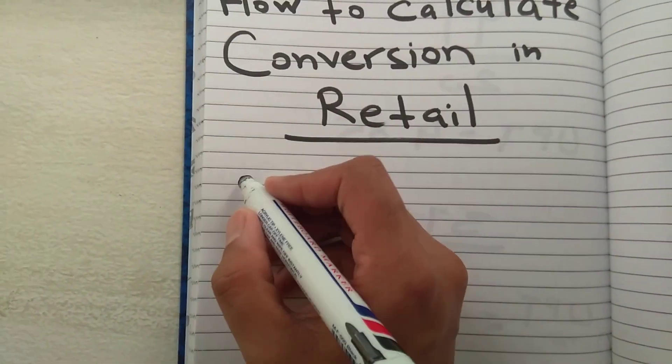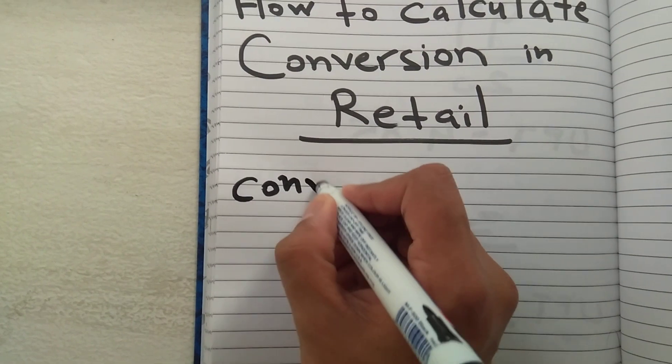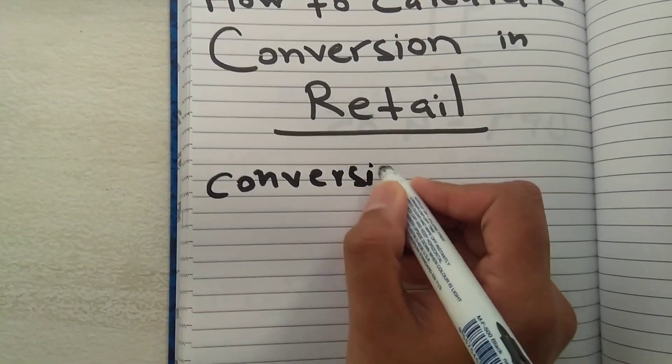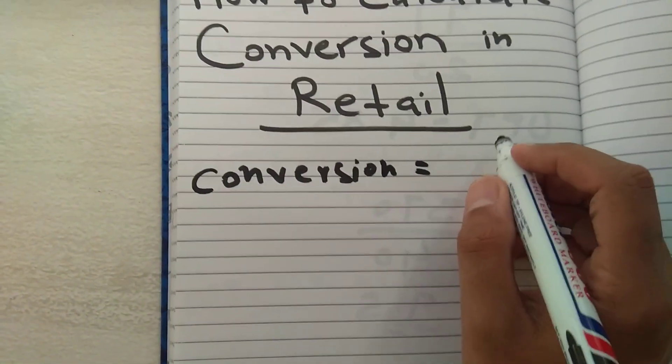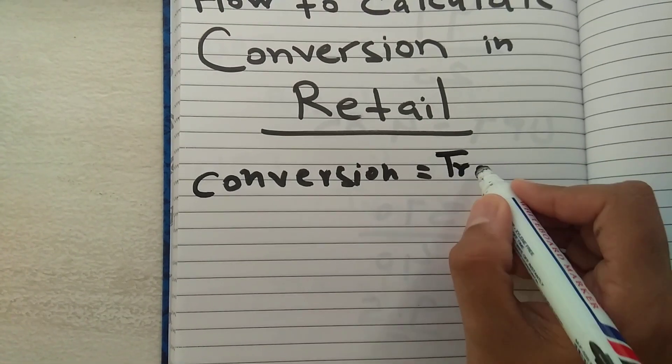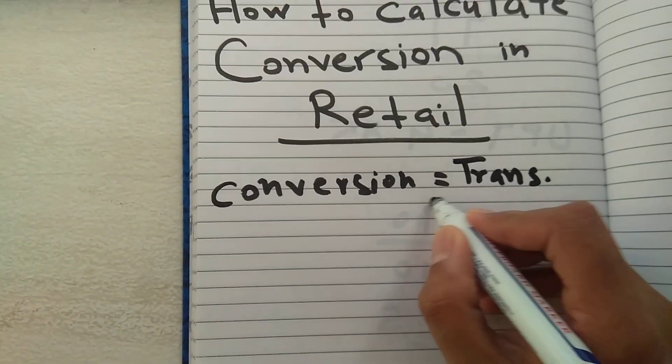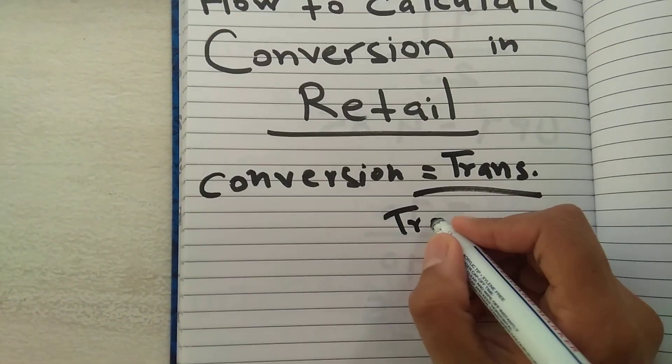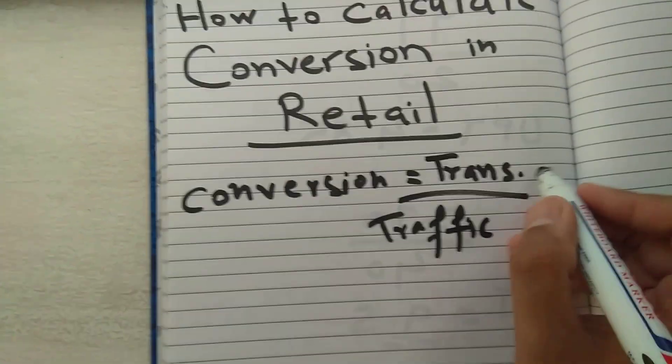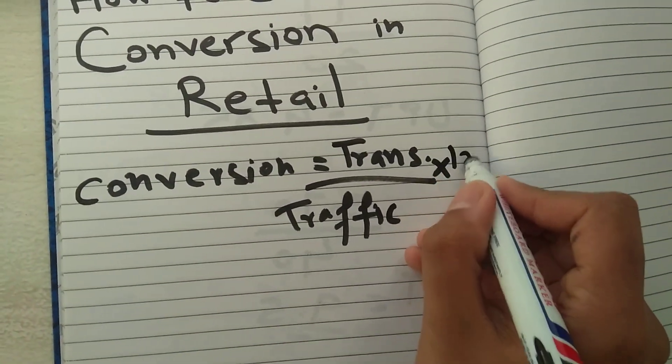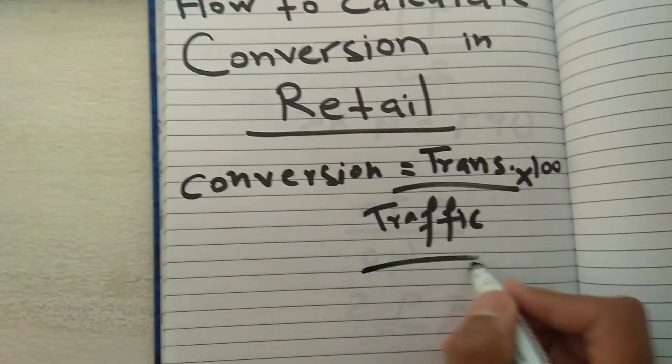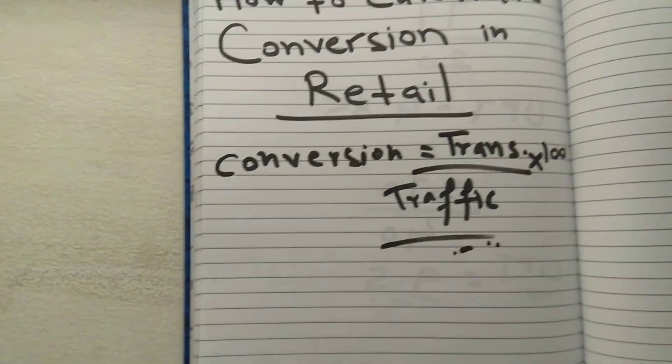The formula for conversion is: conversion equals transactions divided by traffic, and then multiply by 100. So this is the formula.